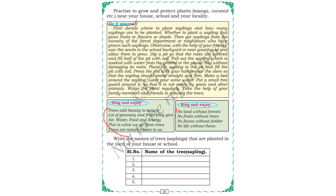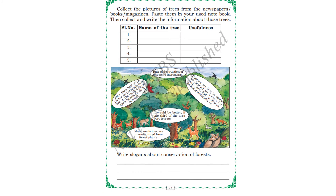Write the names of trees or saplings that are planted in the yard of your house or school. Near my house I have a tulsi plant, I have jasmine, and I have a spring onion plant because I like spring onion so I grow it. Collect pictures of trees from newspapers, books, and magazines, paste them in your used notebook, then collect and write information about these trees. You should write the name of the tree and the usefulness of the tree.